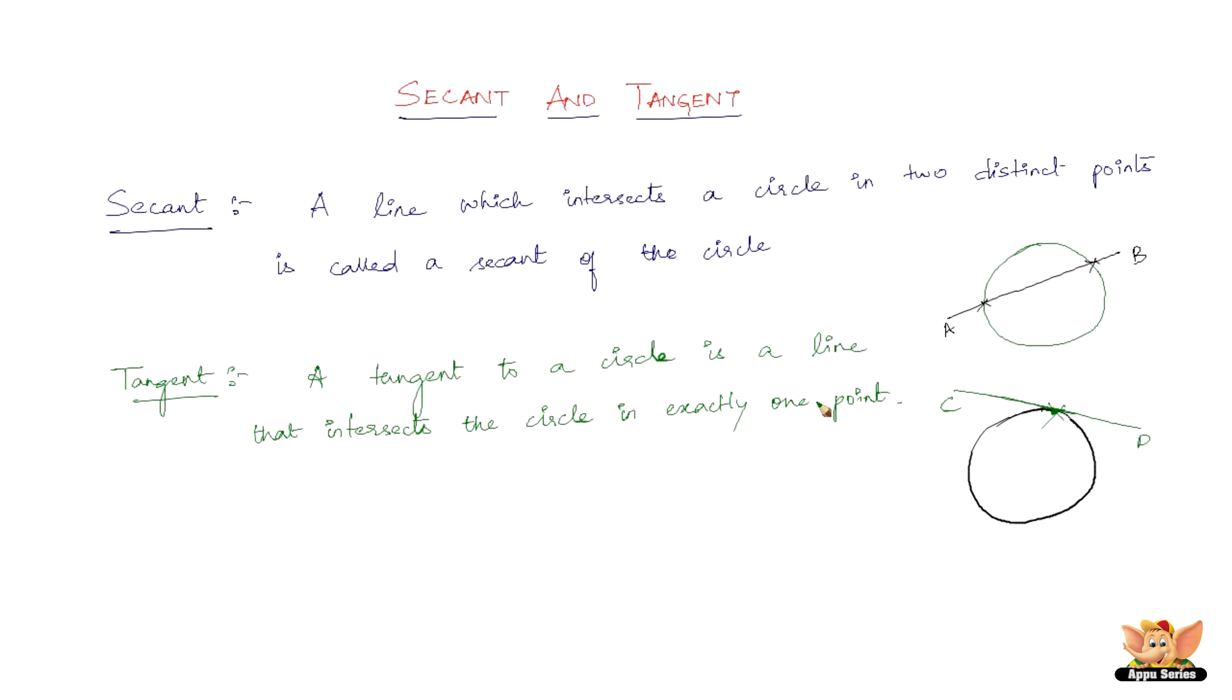Tangent to a circle is a line that intersects the circle in exactly one point. So the words or the terms secant and tangent are two of the most basic terms related to circles. Of which of course tangent is the most commonly used and the most important one.